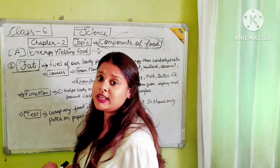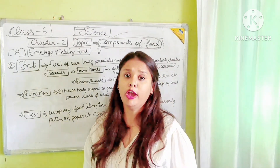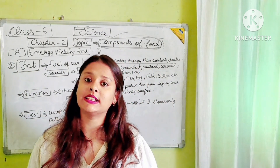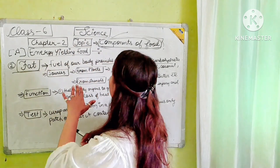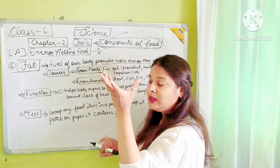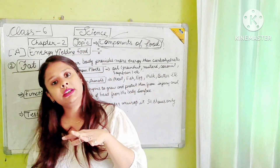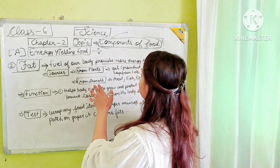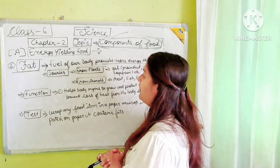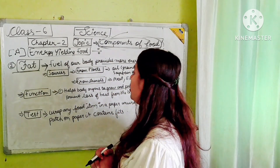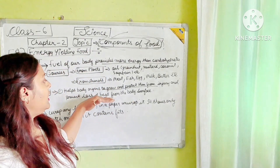The second energy yielding food is fat. Fat is the fuel of our body and provides more energy than carbohydrates. What are the sources of fats? From plants we get oils — groundnut, mustard, coconut, soybean — as mustard oil, coconut oil, soybean oil. From animals we get meat, fish, egg, and butter. The function of fat is it helps body organs to grow and protects them from injury, and it also prevents the loss of heat from the body surface.